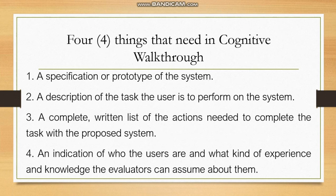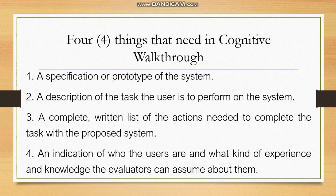There are four things needed in a cognitive walkthrough. First, a specification or prototype of the system. Second, a description of the task the user is to perform on the system. Third, a complete written list of the actions needed to complete the task with the proposed system. The last one is an indication of who the users are and what kind of experience and knowledge the evaluators can assume about them.